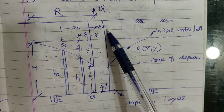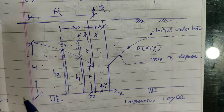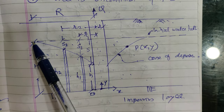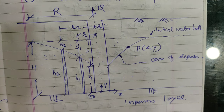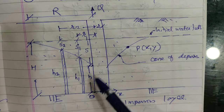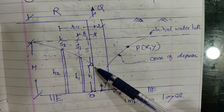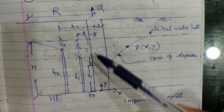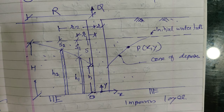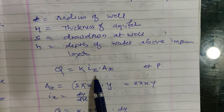In this figure, r is the radius of the well, H is the thickness of the aquifer measured from the impervious layer to the water level, s is the drawdown, and small h is the depth of water above the impervious layer after drawdown.